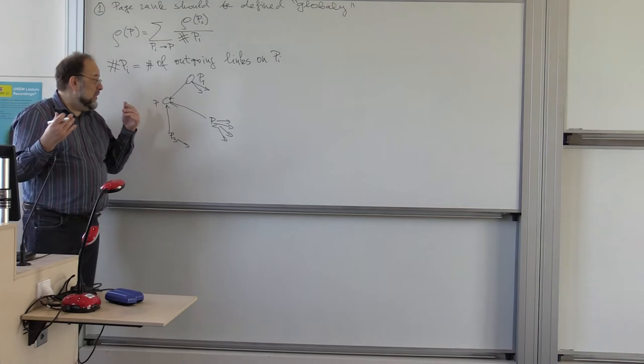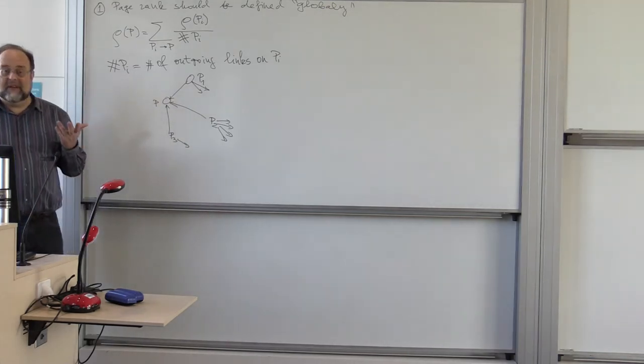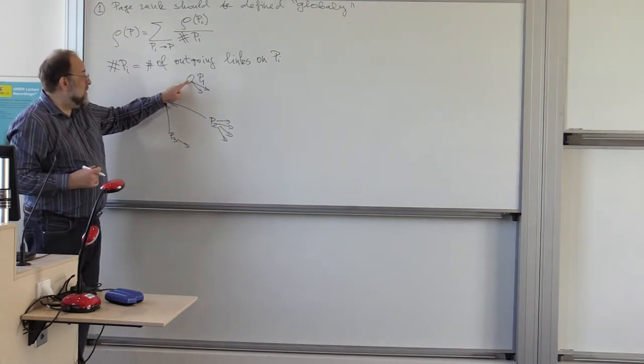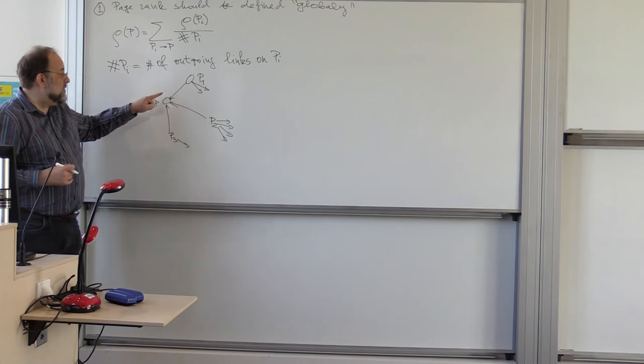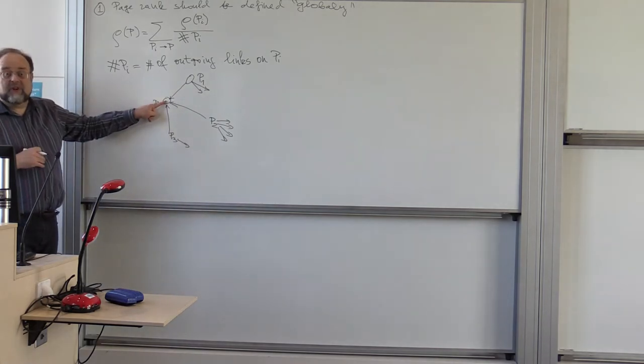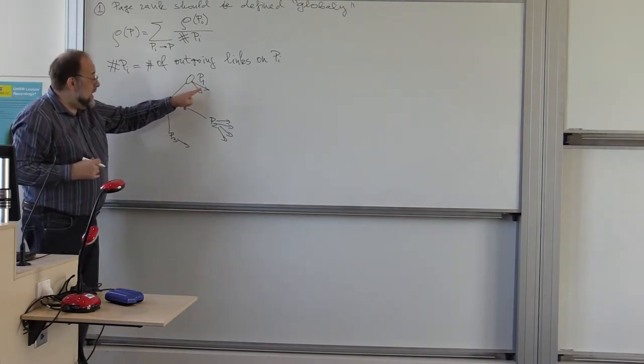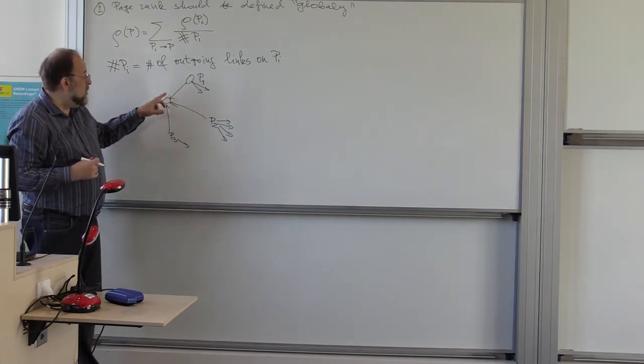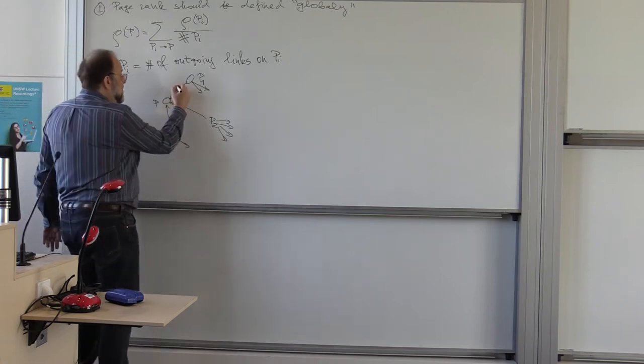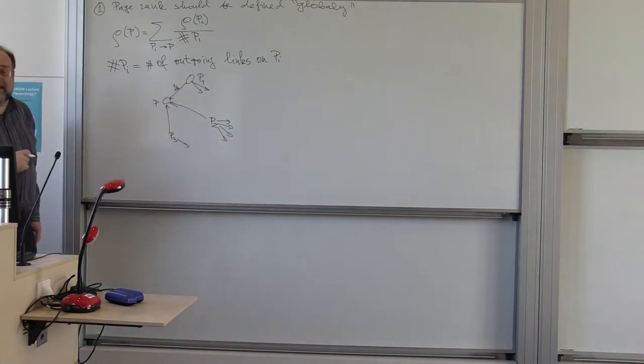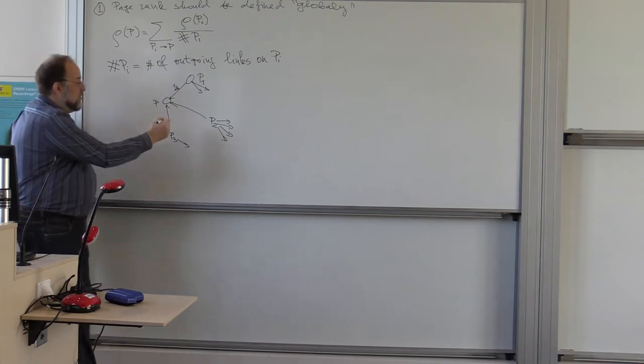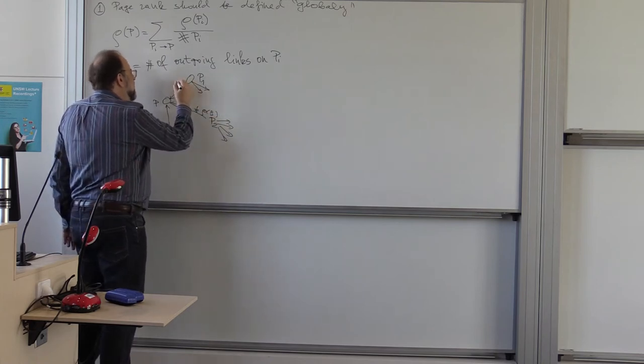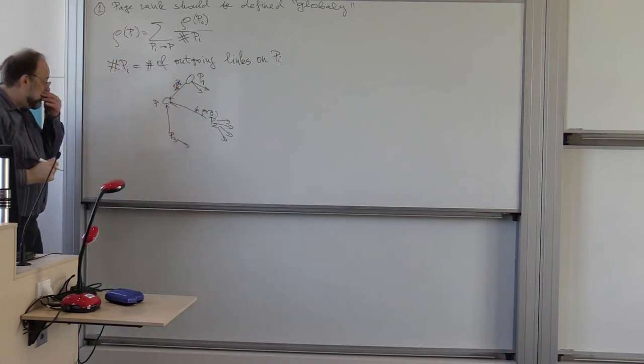So, you can think about this as a recommender system. This web page recommends that web page. So, in a sense, the credibility of P-I is conferred to the credibility for the quality of P-I, but to avoid kind of inflation, every web page to which P-I points gets the fraction, the corresponding fraction. So, here would be, for example, one-third if P-I has three outgoing links. Here it would be one-fifth of rho of P-I. Here it would be one-third of rho of P-I.